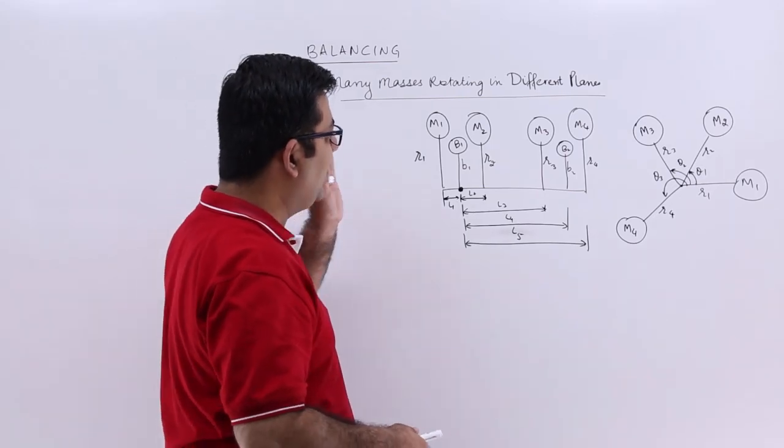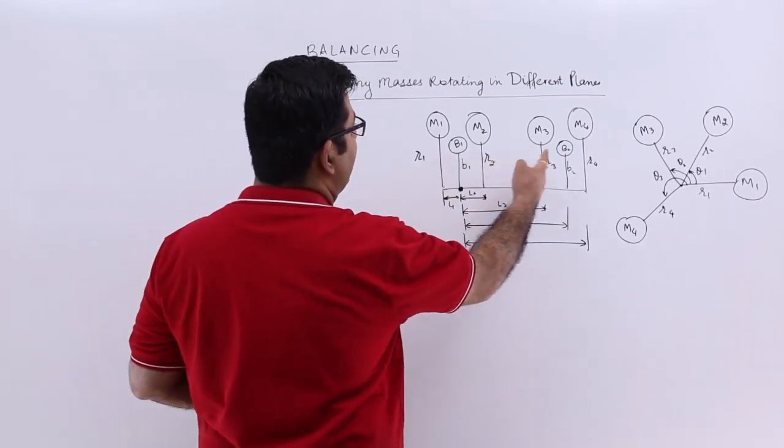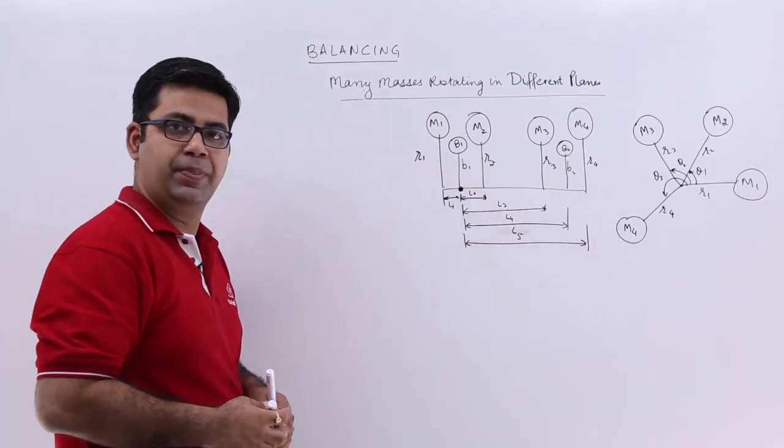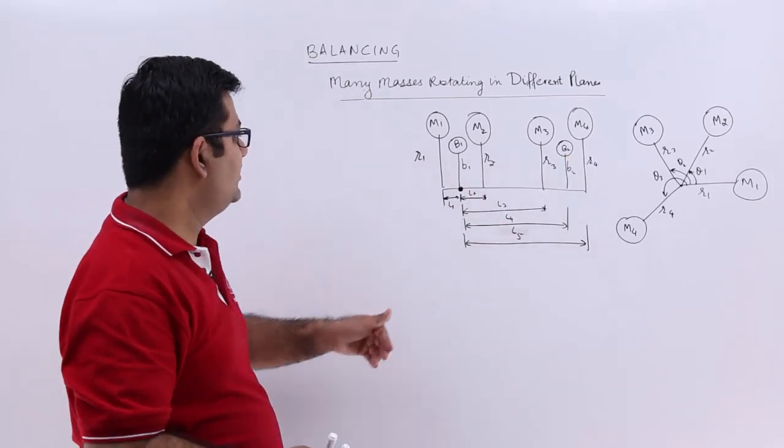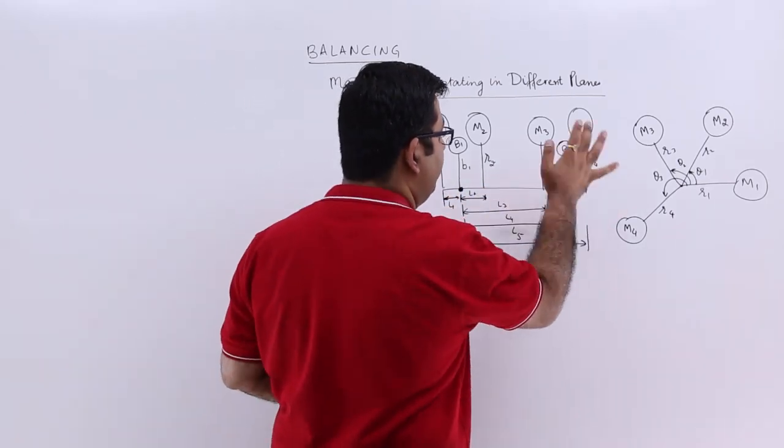Now to balance this system, let us say we are putting two balancing masses, B1 and B2. The first balancing mass is in between M1 and M2 and the second one is in between M3 and M4.